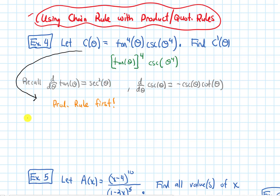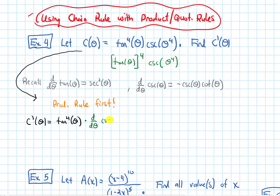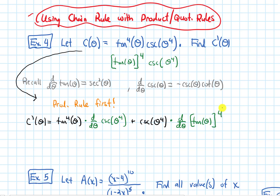So when we do that, we'll get c prime of theta equals the first function, tangent to the fourth of theta, times the derivative of the next thing. I'm going to write it out in steps, so I'll write d/dθ of cosecant of theta to the fourth. And then plus the second function, cosecant of theta to the fourth, times the derivative of the first — written as tangent of theta to the fourth power, so it's easier to see what the inside and outside functions are.